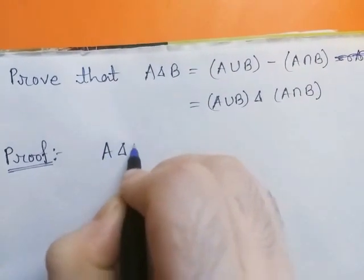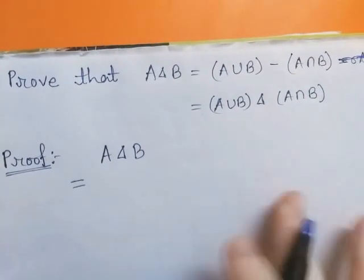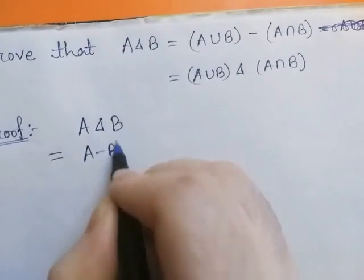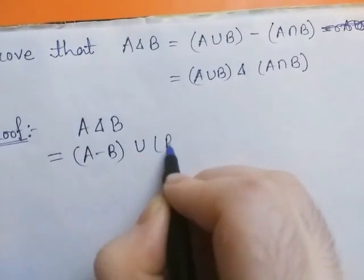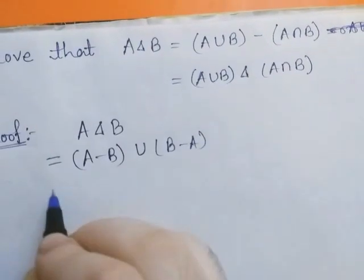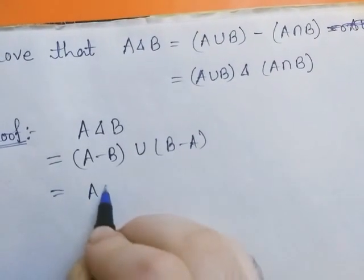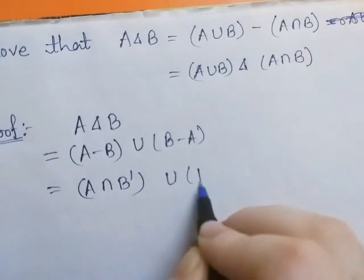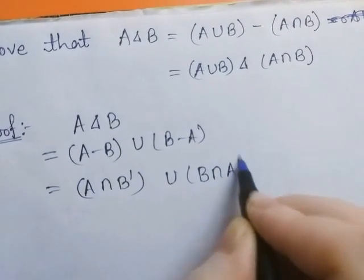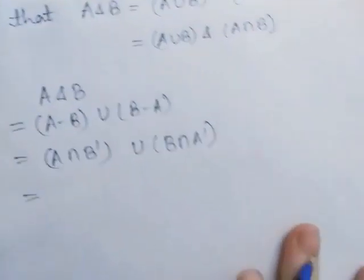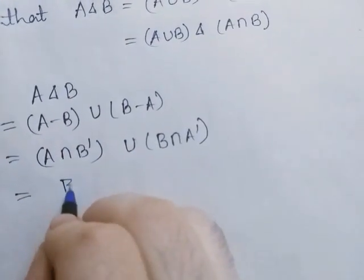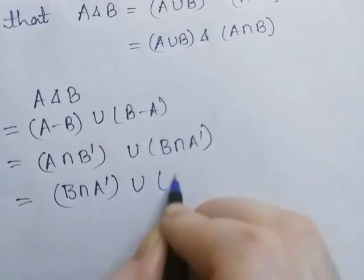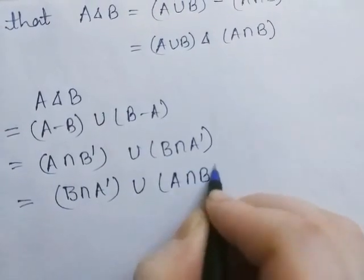Now, A Δ B by definition of symmetric difference can be written as (A − B) ∪ (B − A). We know A − B equals A ∩ B', and B − A equals B ∩ A'. Applying the commutative law, we write this as (B ∩ A') ∪ (A ∩ B').